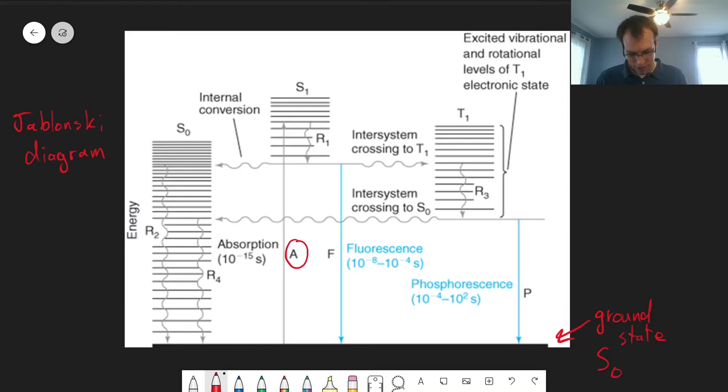Now that light will be absorbed, and that's represented by this A here. That's absorption of light, and the electron will go into an excited energy level. The different lines here represent different vibrational energy levels. When the molecule absorbs light, it changes not only the electronic state but also the vibrational levels.